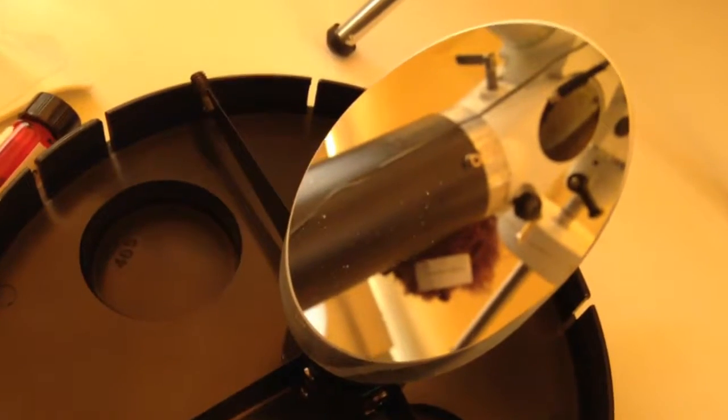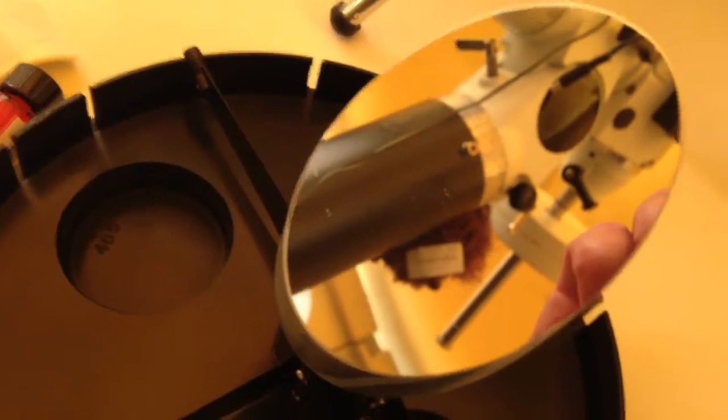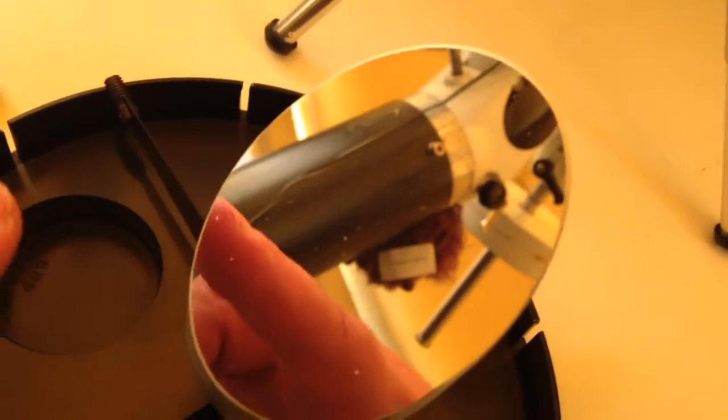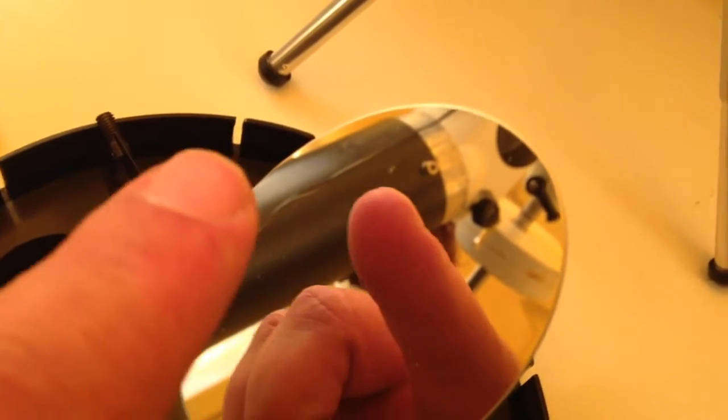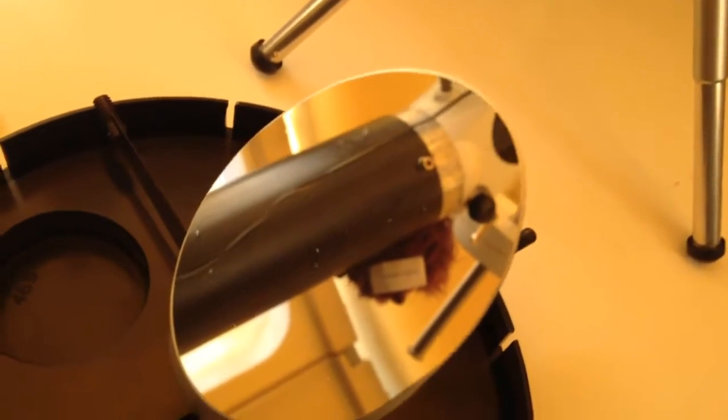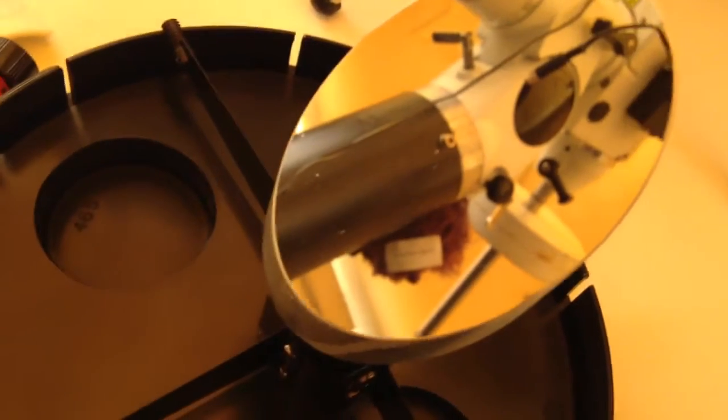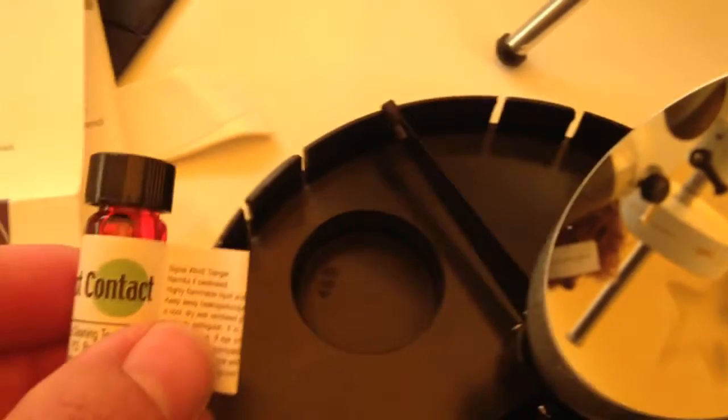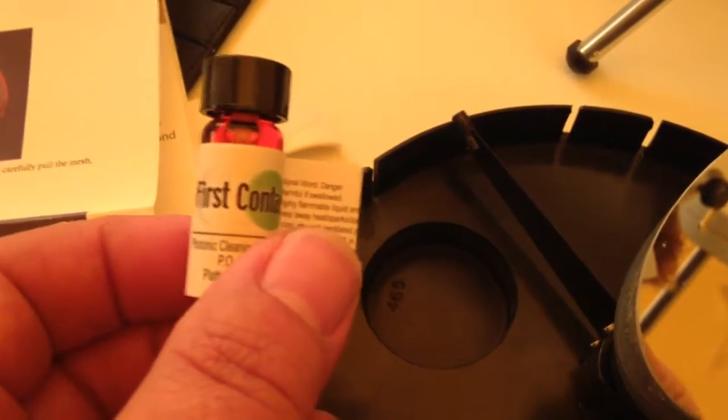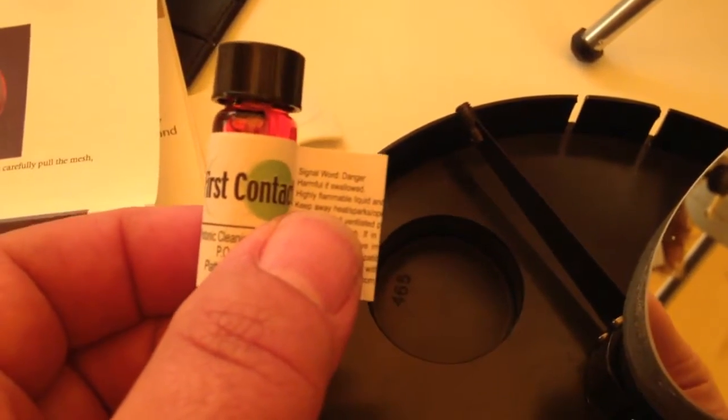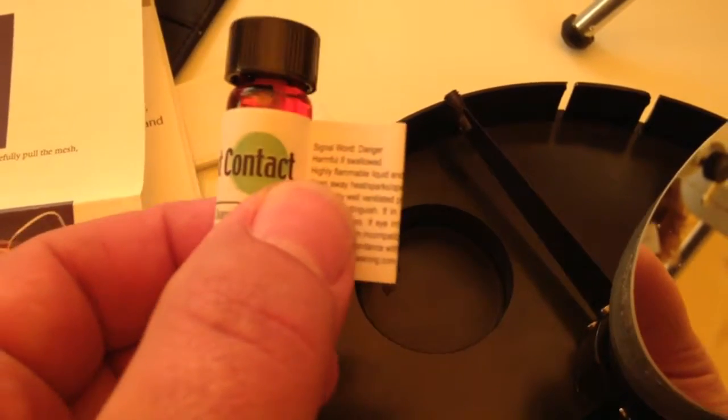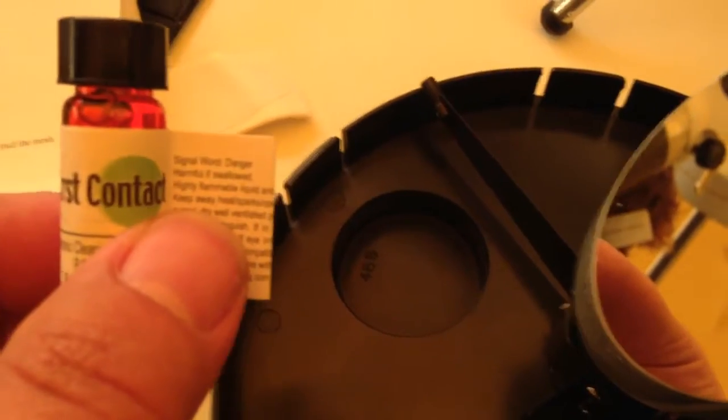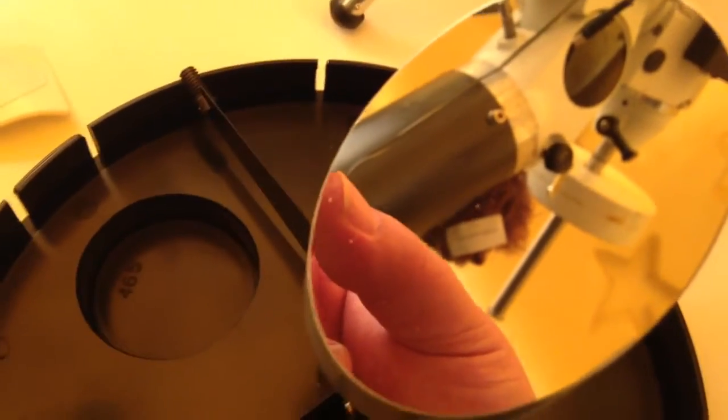Okay, so this is the secondary from my Newtonian scope. If I move it around with the camera, you can see along here and here that I've got some marks on the secondary. What you probably won't be able to see is that there's actually quite a buildup of dust as well. Now this is a sample-sized bottle of the First Contact cleaning solution from Photonic Cleaning Technologies, and I'm going to be trying it out to see how well it's going to clean up my secondary.